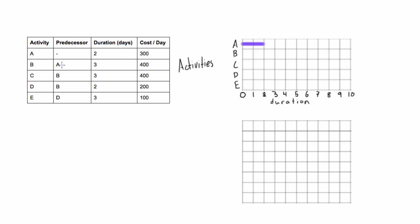Activity B depends on activity A and it's three days long. Activity C depends on B and is three days long. Activity D also depends on activity B and it's two days long. Activity E depends on D and it's three days long, taking us right to the end of the tenth day.